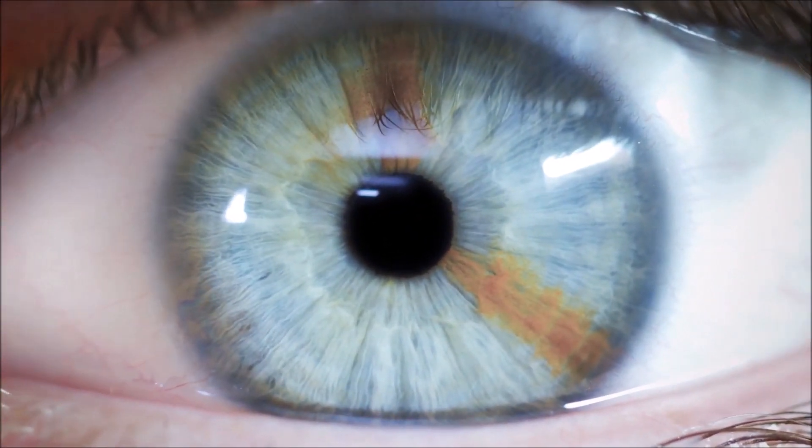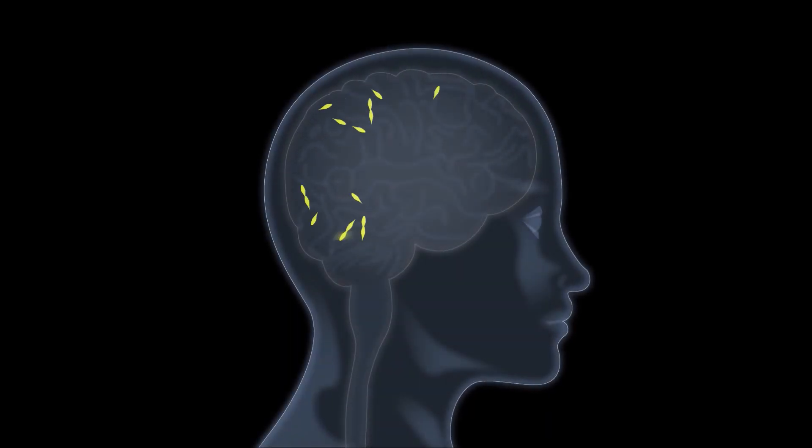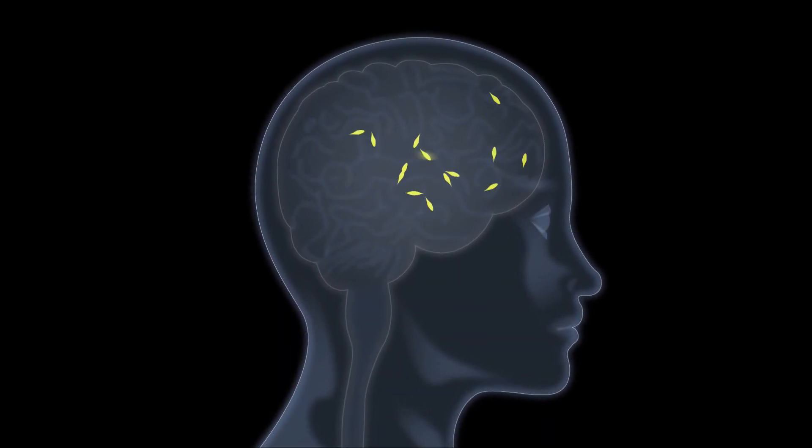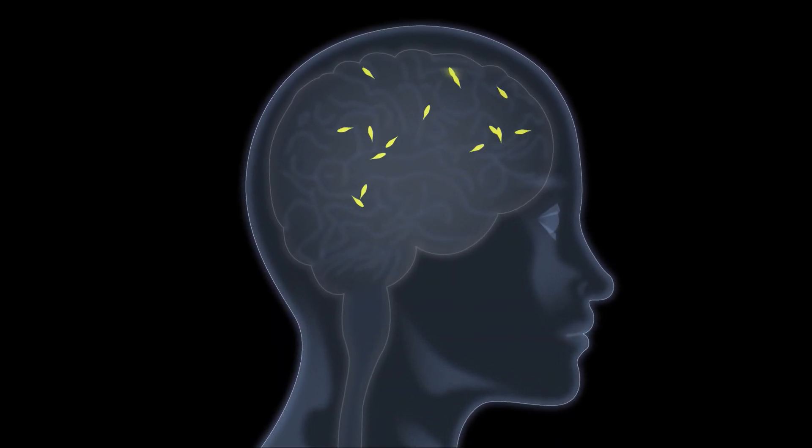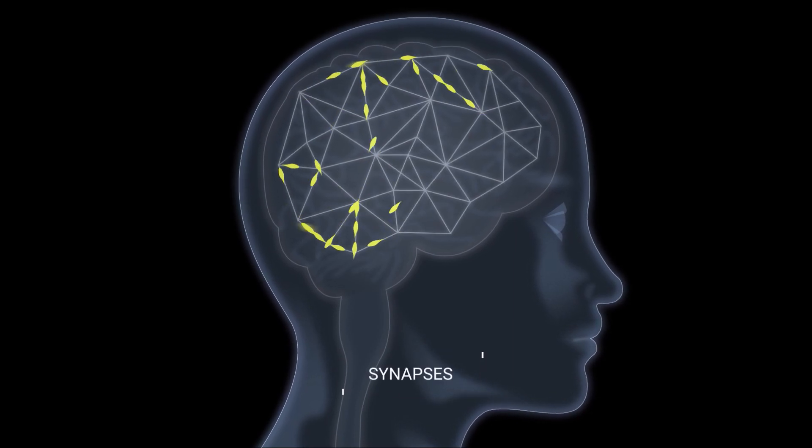Research over the last decades has unveiled some of the secrets of this amazing organ. The brain is composed of over 85 billion neurons of different types that form more than 100 trillion connections called synapses.